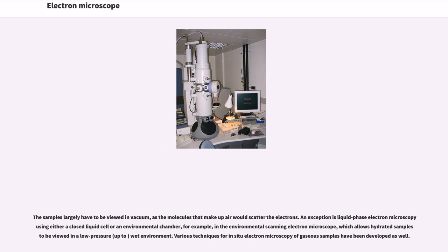The samples largely have to be viewed in vacuum, as the molecules that make up air would scatter the electrons. An exception is liquid phase electron microscopy using either a closed liquid cell or an environmental chamber, for example, in the environmental scanning electron microscope, which allows hydrated samples to be viewed in a low pressure, wet environment. Various techniques for in situ electron microscopy of gaseous samples have been developed as well.